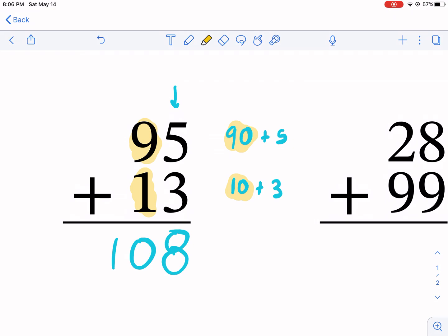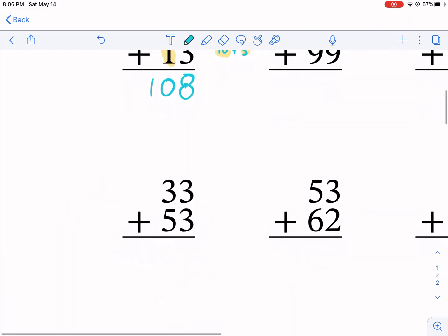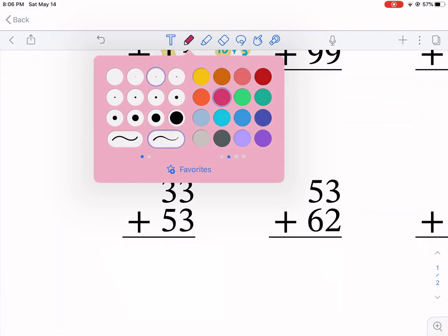90 plus five plus 10 plus three is the same problem. 90 plus 10 is 100. Five plus three is eight, which is why we get 100, 90 plus 10, plus eight, 108. That's just a side point, but the standard algorithm will not lead you astray. You can just trust in that.